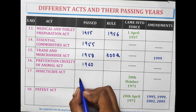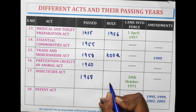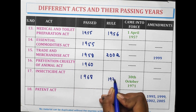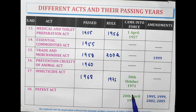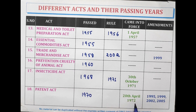The Insecticide Act was passed in 1968 and the rules in 1971, came into force on 30th October 1971. The Patent Act was passed in 1970 and came into force on 20th April 1972. Amendments were done in the years 1999, 2002, and 2005.